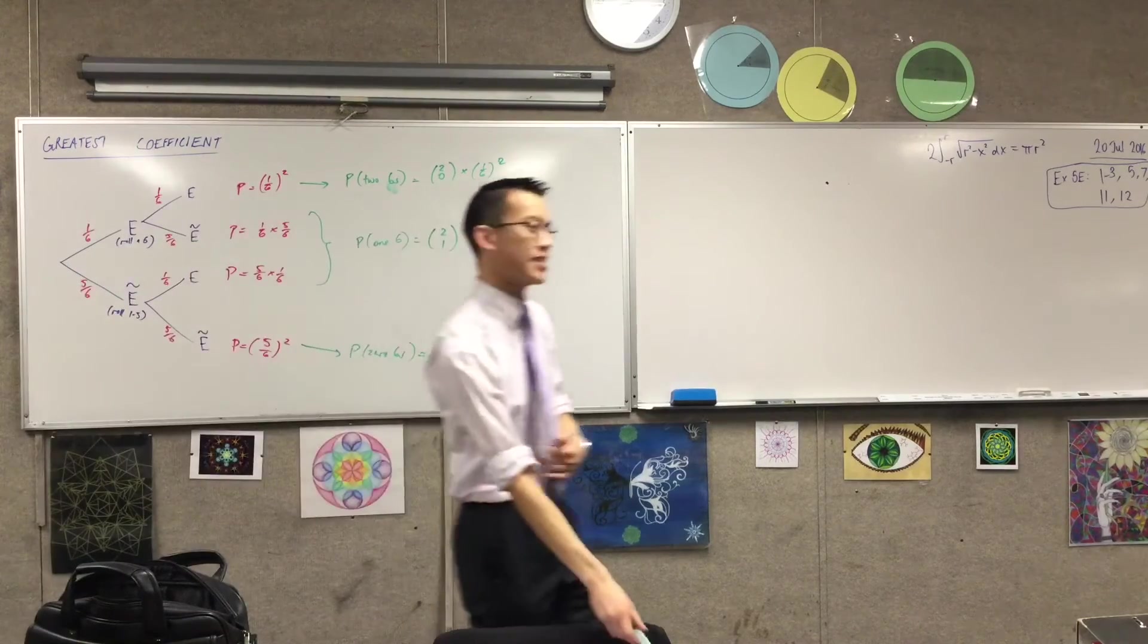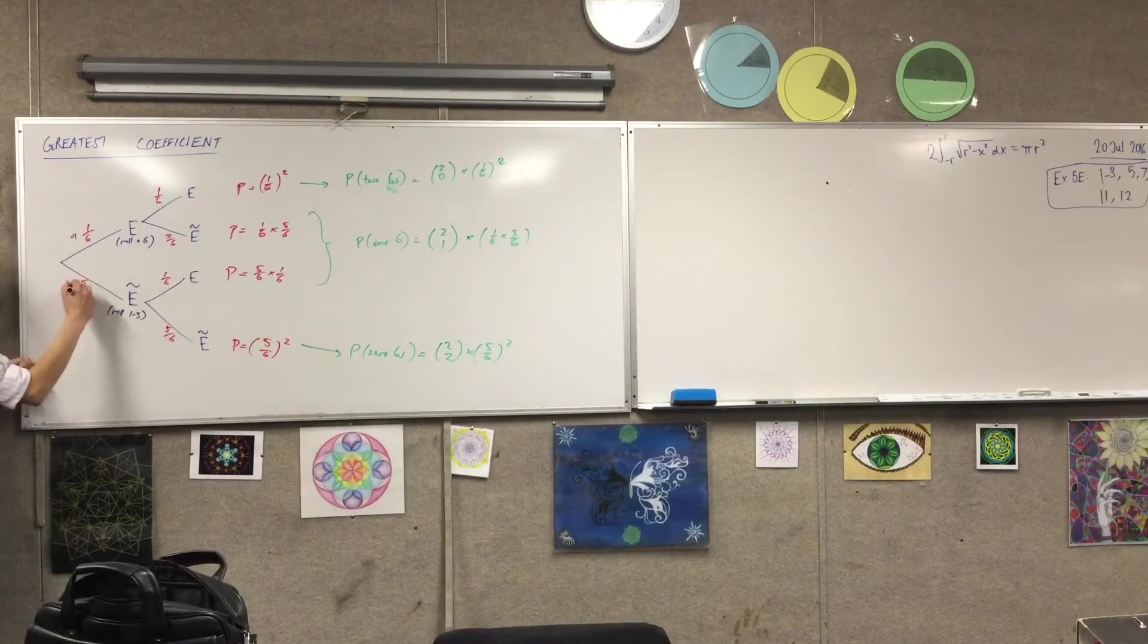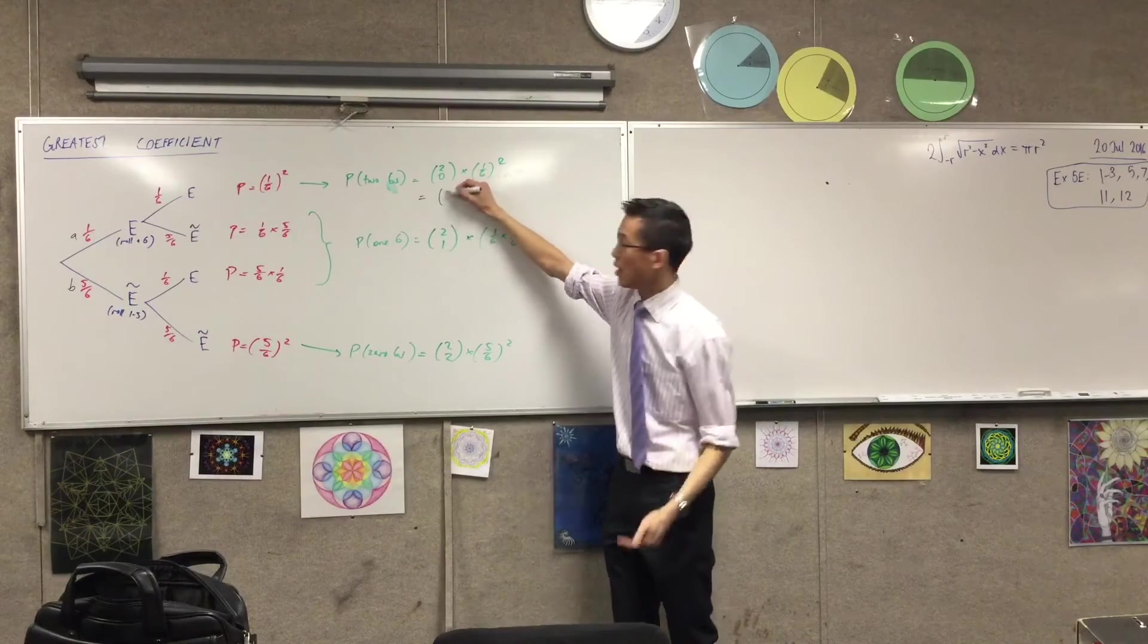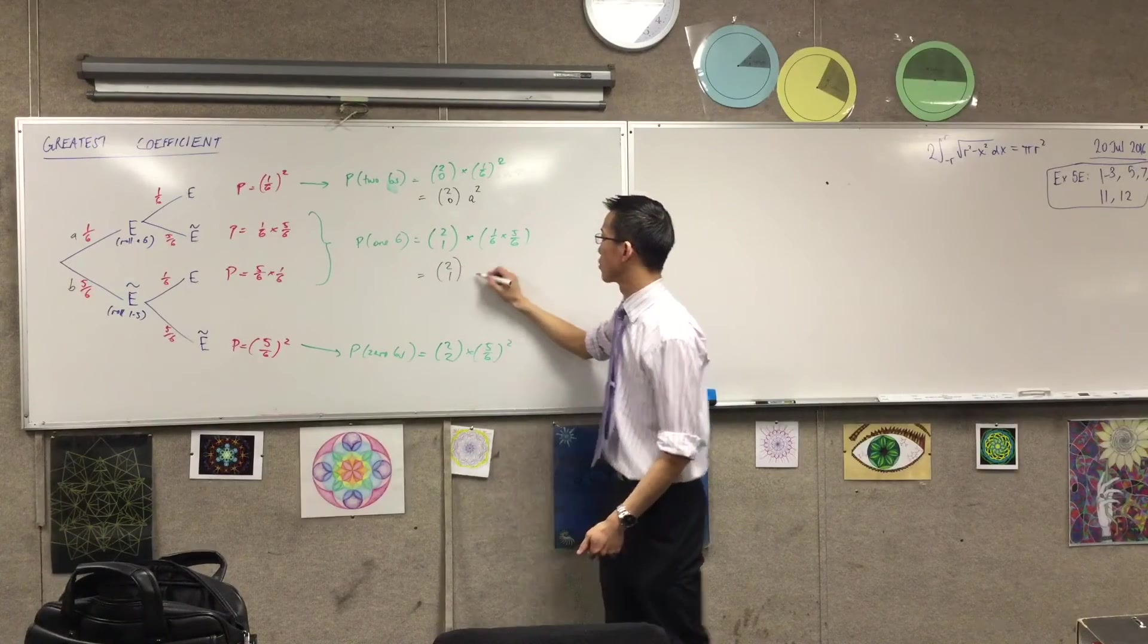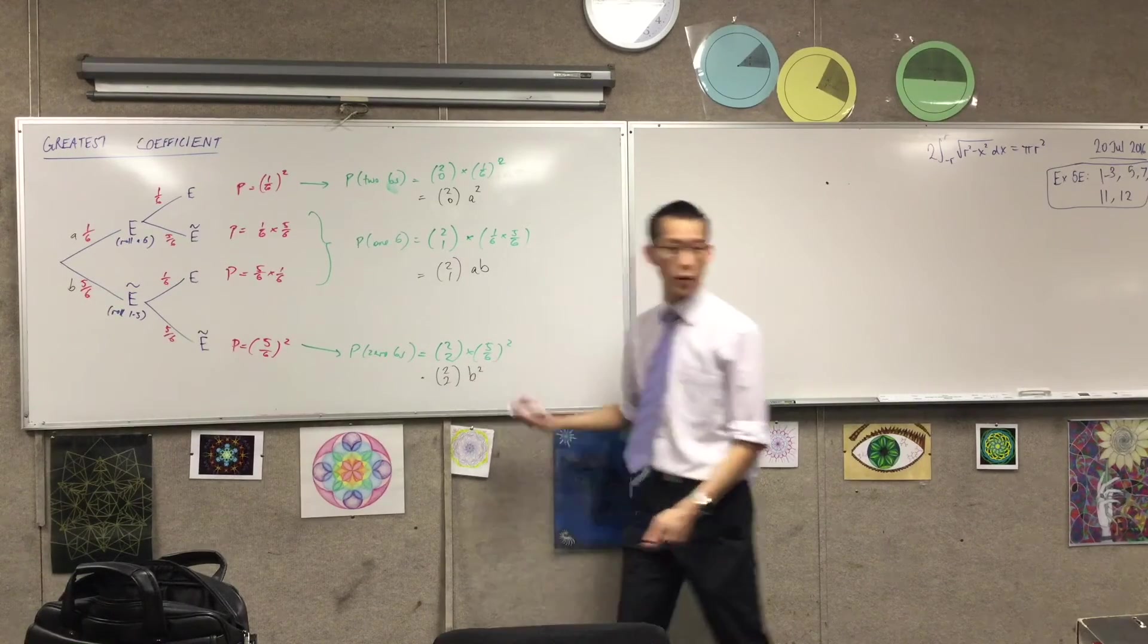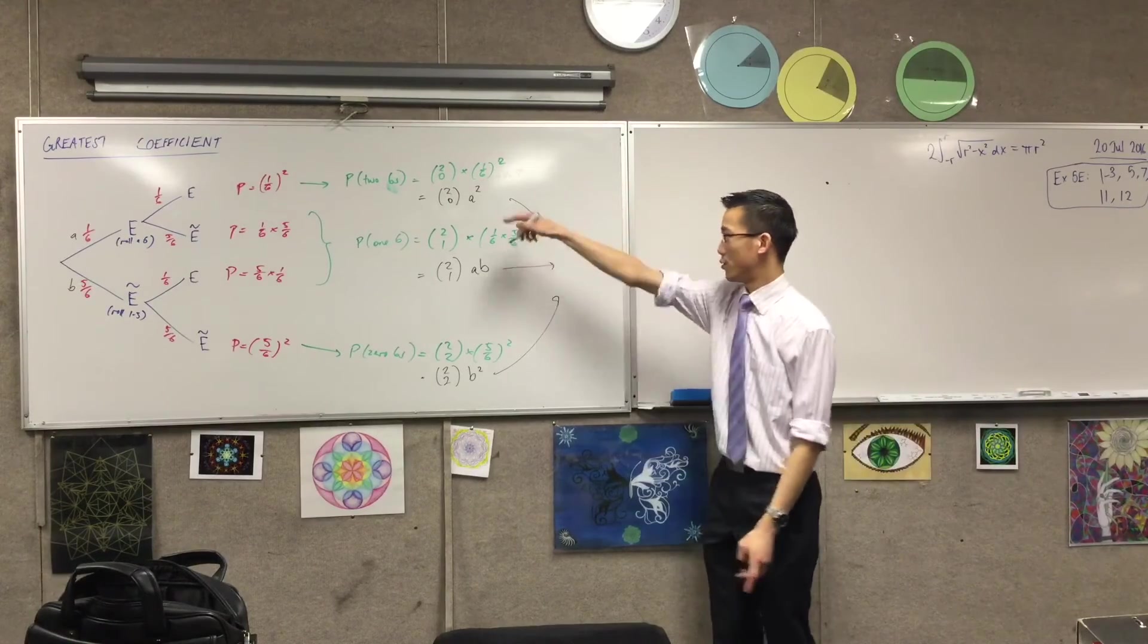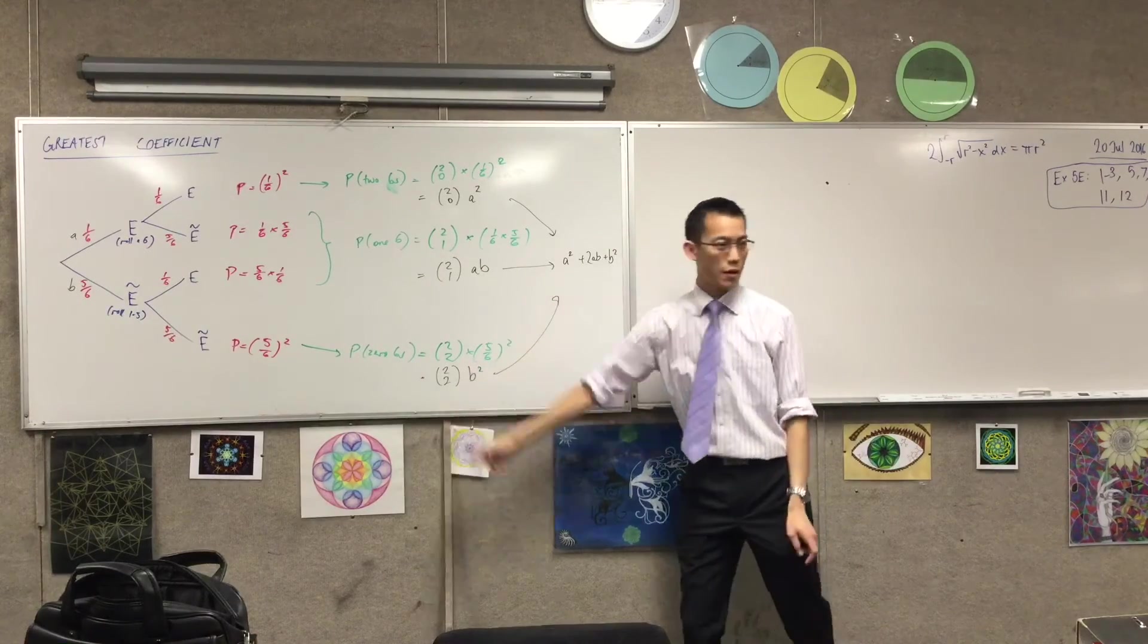So if I were to change these from a sixth and five-sixths to be more general, and just to say, let's just call this a and b, a and b, then what you're getting over here is the familiar binomial coefficients that you've seen before. This is going to be two choose zero, a squared. This will be two choose one, ab, and this will be two choose two, b squared. Which, of course, once you combine all of these things together, gives you the sum of all of the terms in your binomial expansion. Two choose one, of course, is just one, plus that is two, and this is one. So you can see this is where the binomial expansion comes from.